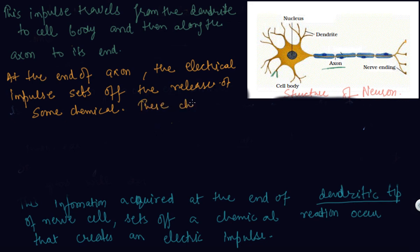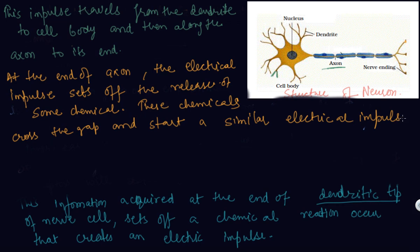These chemicals cross the gap and start a similar electrical impulse in a dendrite of the next neuron.